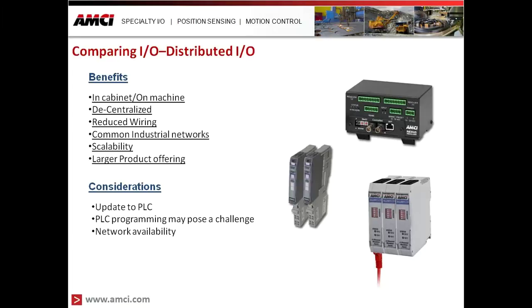Some considerations with distributed IO include the update rate to the PLC. Because you're going through a network connection, there are communication limitations to be aware of. If you have very high-speed inputs or outputs that need to be monitored or controlled, you may want to put those in your PLC rack rather than a distributed IO solution.